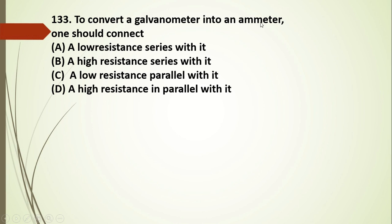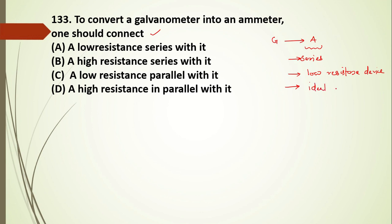Question 133: to convert a galvanometer into an ammeter, we connect a low resistance in parallel with the galvanometer. The ammeter must be connected in series with the circuit without disturbing it, so it must be a low resistance device. Ideally the resistance of an ammeter approaches zero. The low resistance connected in parallel is called the shunt resistance.